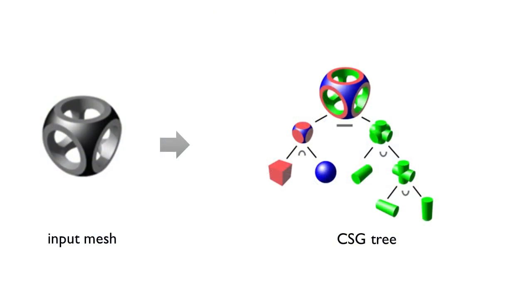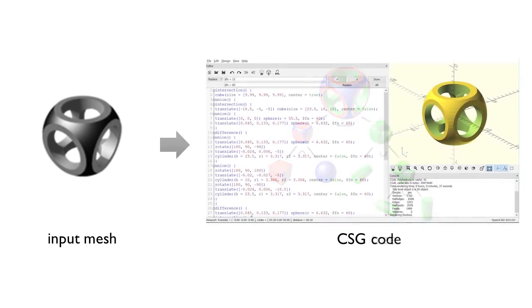In this work, we propose a method for automatically generating a CSG tree from an input 3D mesh. Our approach is based on the realization that CSG is simply a class of computer programs.